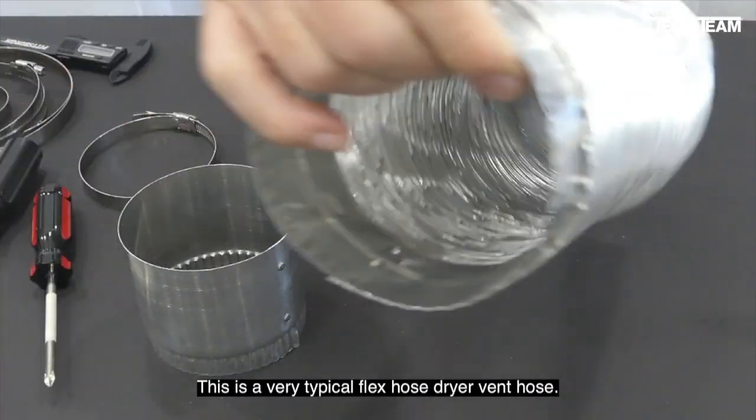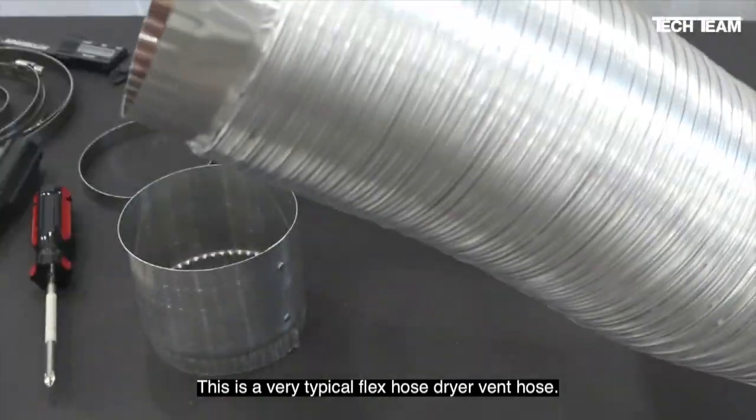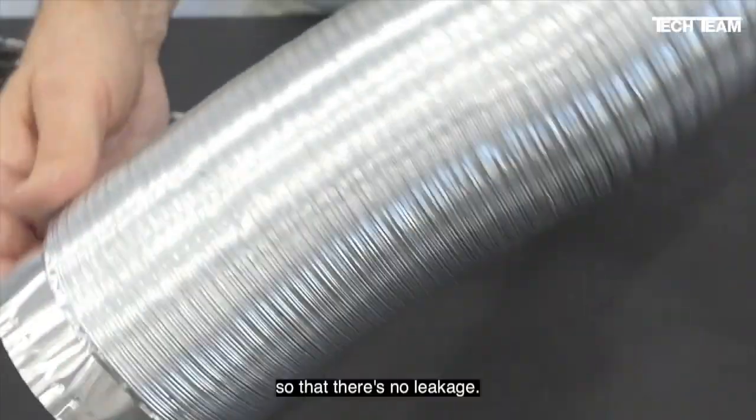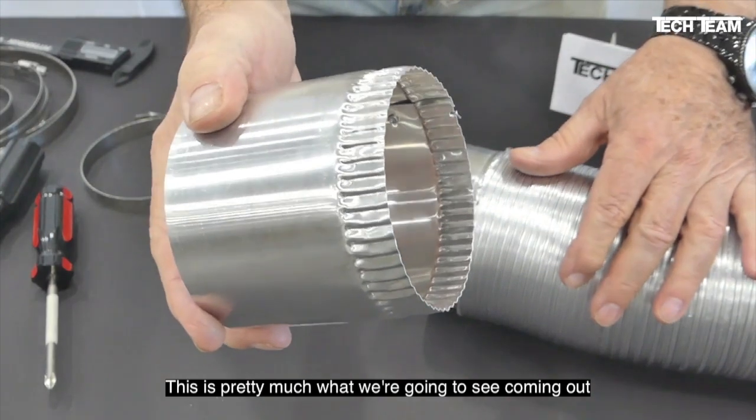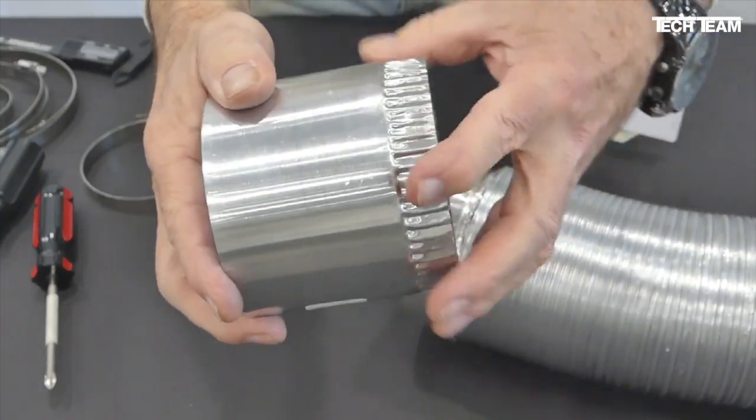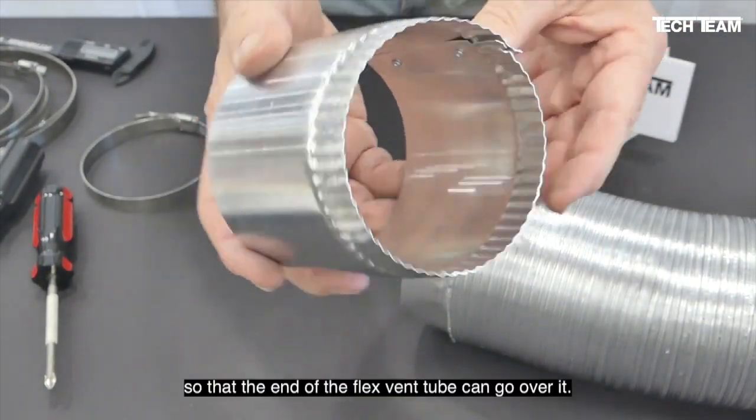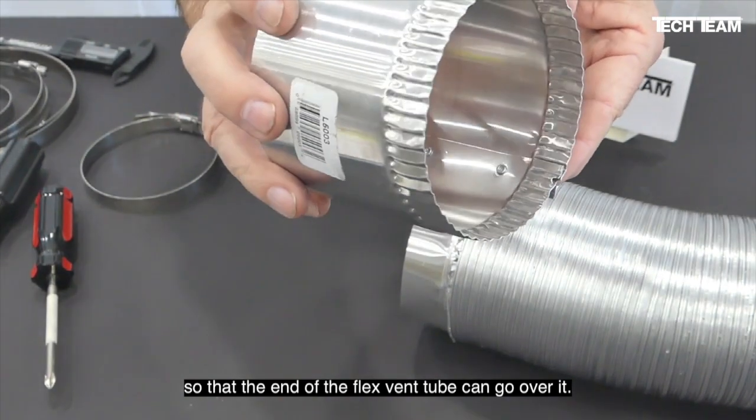This is a very typical flex hose dryer vent hose. The objective here is to connect the two of them so that there's no leakage. This is pretty much what we're going to see coming out of the back of the dryer. And we're going to see this end, which has been formed like this to reduce it in size a little bit so that the end of the flex vent tube can go over it.